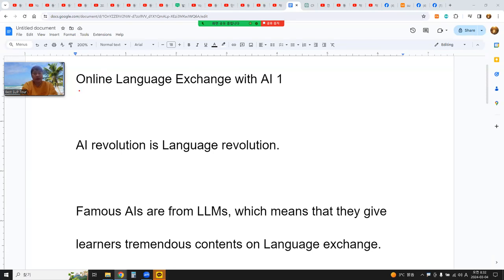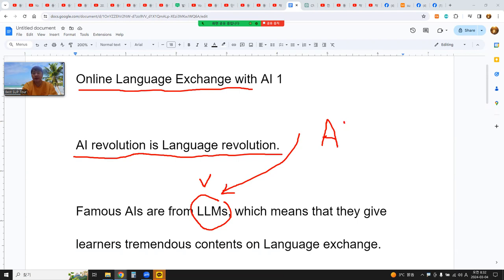I'm talking about online language exchange with AI. AI revolution is language revolution. The large language models are very effective. There are tremendous contents on AI platforms generated by AI. The famous AI like ChatGPT are from LLMs, which means they give learners tremendous contents on language exchange.